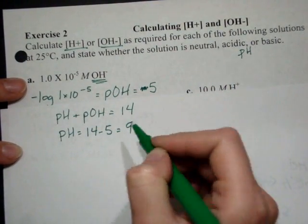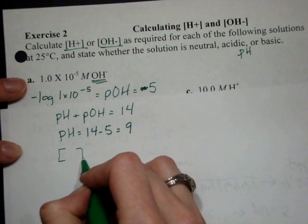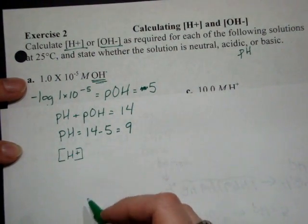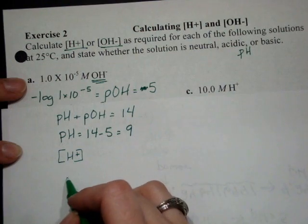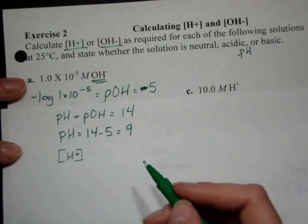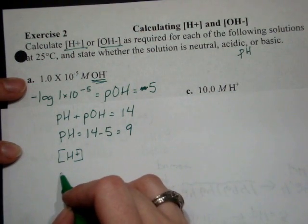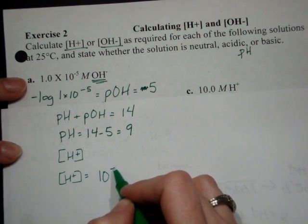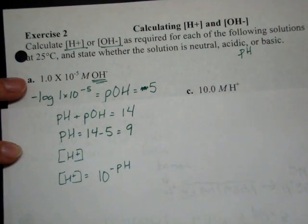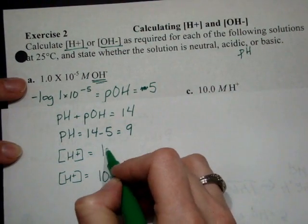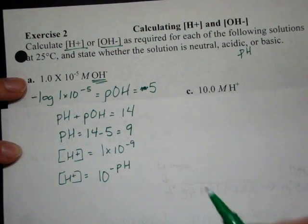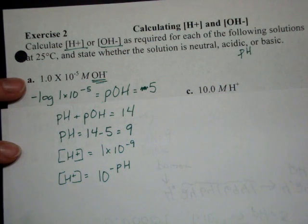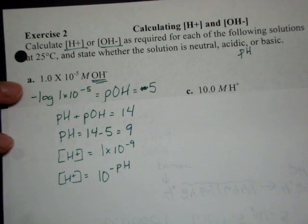So that would be 9. And then when you want to get the hydrogen concentration back out of this, pH is negative log of the concentration. Then the concentration equals 10 to the negative pH. So in this case, that's 1 times 10 to the negative 9. So that's just two ways to do the same problem. Both give you the same pH. Both give you the same hydrogen concentration. Both tell you that it's basic.